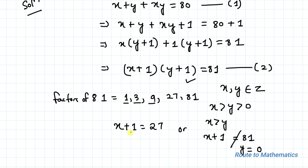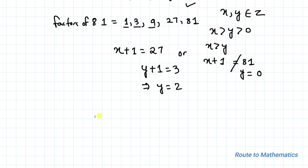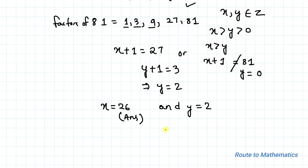We are left with only x plus 1 equals 27. The corresponding value is y plus 1 equals 3, which gives y equals 2. Therefore x equals 26 and y equals 2. Since we are asked only for the value of x, the answer is x equals 26.